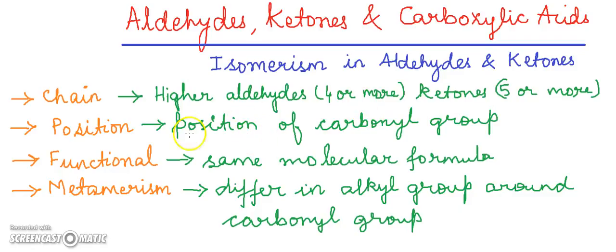In chain isomerism, the isomers differ in the chain of the carbon atoms. In position isomerism, the higher ketones and aromatic aldehydes exhibit position isomerism, in which the isomers differ in the position of the carbonyl group.